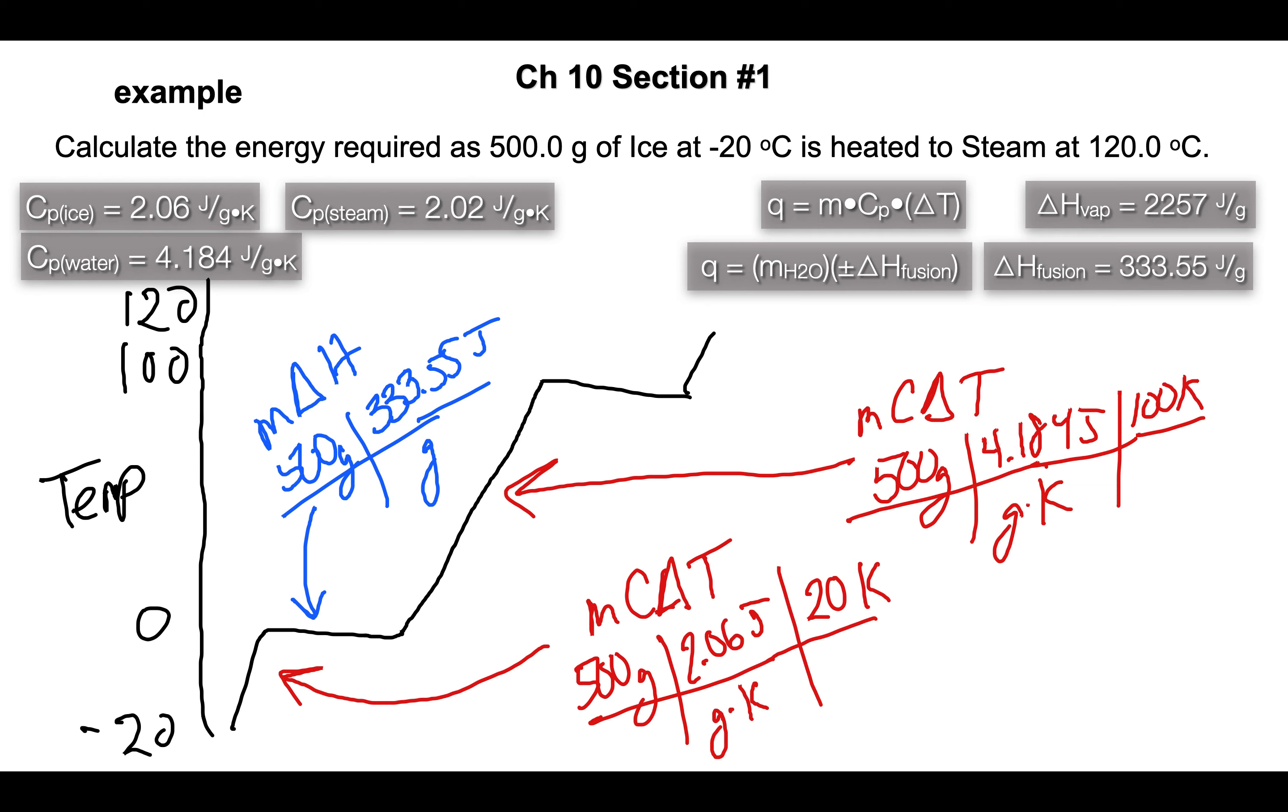We have to get the 500 grams of water to boil away into steam. So again we're using m times delta H and we got 500 grams and vaporization is 2257 joules per gram.